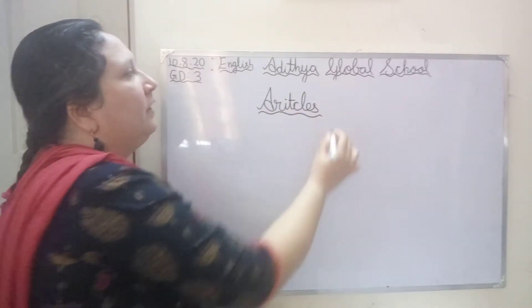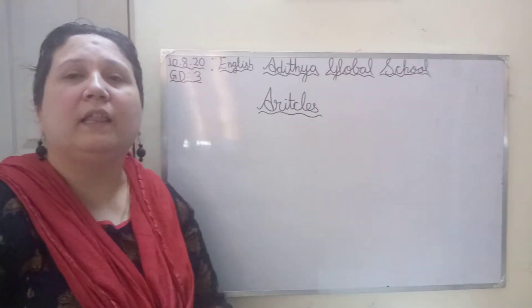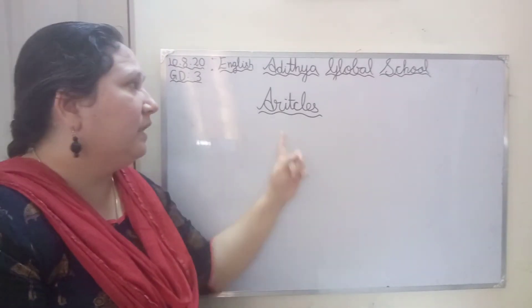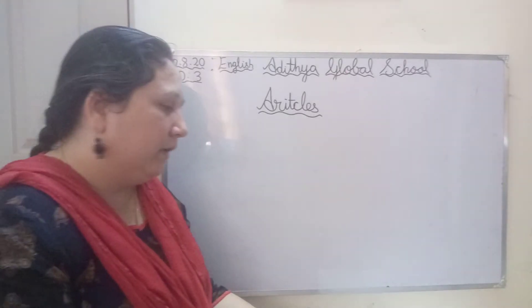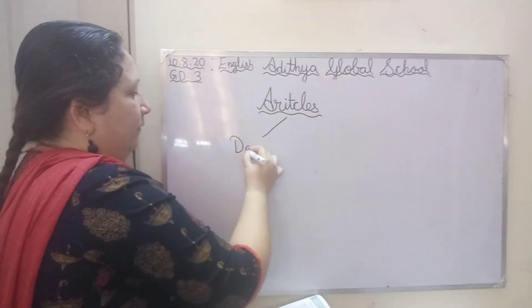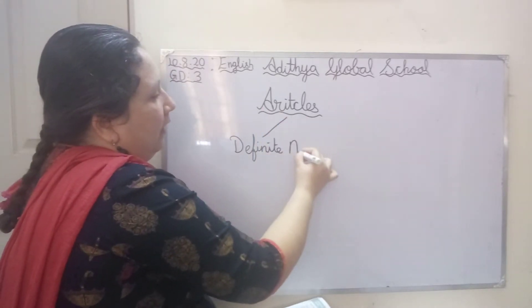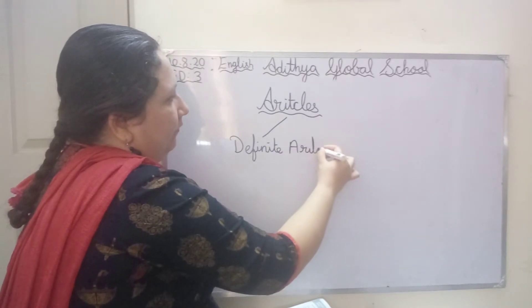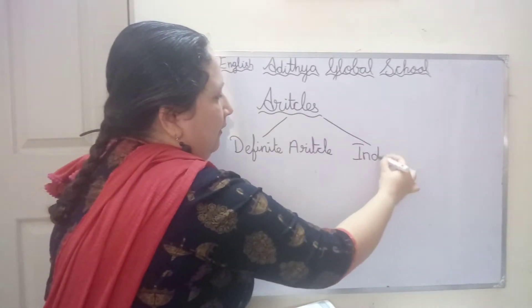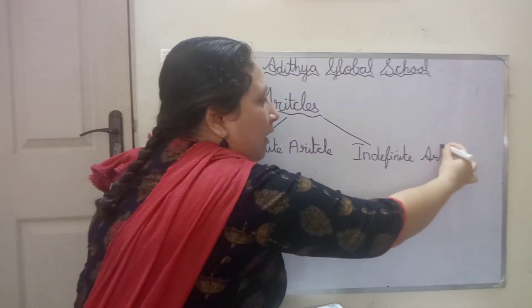This is something new, right? Articles — right from first standard we have been studying about A, AN, and THE. So, we all know articles means A, AN, and THE. Now, there are two types of articles. First is going to be your definite article, and the second is going to be your indefinite article.